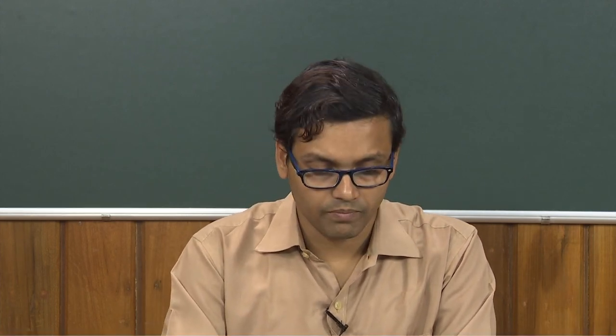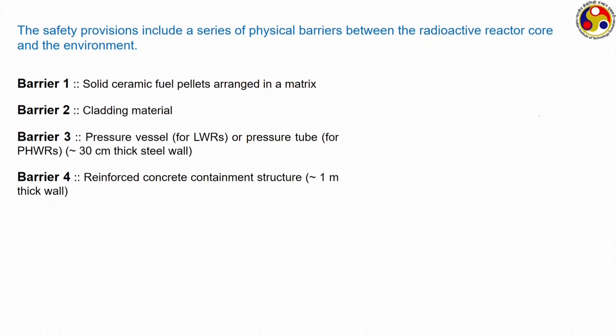The third barrier is the pressure vessel or pressure tube. Pressure vessels are pertinent to light water reactors like PWR or BWR, while PHWR uses a pressure tube type design. The walls of the pressure vessel can be very thick — conventionally around 30 centimeters of thick steel — forming the third level of barrier. Finally, the fourth barrier is the containment structure, generally made of reinforced concrete up to 1 meter thick.